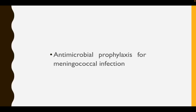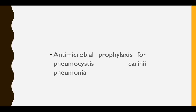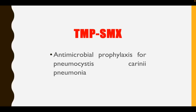What is the antimicrobial prophylaxis for meningococcal infection? We give rifampicin as the drug of choice, and the alternative drug is ciprofloxacin. What is the antimicrobial prophylaxis for Pneumocystis carinii pneumonia, which is the most common cause of pneumonia in a patient with HIV or AIDS? We give trimethoprim-sulfamethoxazole, or TMP-SMX.